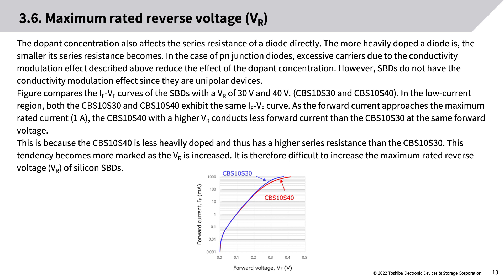Comparing the CBS10S30 and CBS10S40: in the low current region, both exhibit the same IF-VF curve. As forward current approaches the maximum rated current (1A), the CBS10S40 (higher VR) conducts less forward current than the CBS10S30 at the same forward voltage. This is because the CBS10S40 is less heavily doped and thus has higher series resistance. This tendency becomes more marked as VR increases, making it difficult to increase the maximum rated reverse voltage of silicon SBDs.